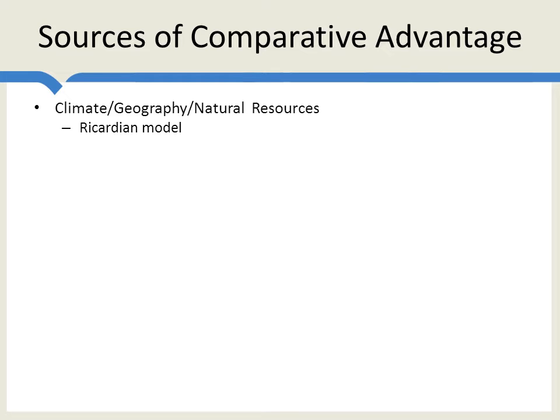Bear in mind, however, don't forget it is comparative advantage. So Florida may have an absolute advantage both in producing oranges and in producing tourism, but its comparative advantage may be in producing tourism. So even if Florida is the best place in the world for growing oranges, we might see more tourism there and more oranges grown elsewhere if Florida has a comparative advantage in tourism.